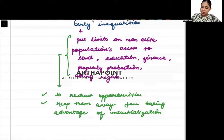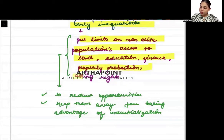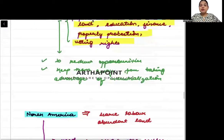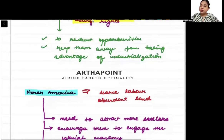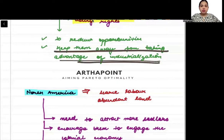The early inequalities put limits on the non-elite population's access to land, education, finance, property protection, voting rights, etc. If there were inequalities already existing earlier in a country, it means that it will go ahead and reduce the opportunities available to the people. It will keep them away from taking advantage of industrialization.